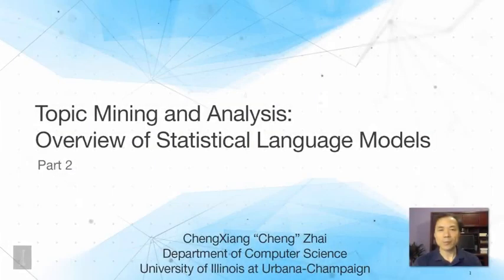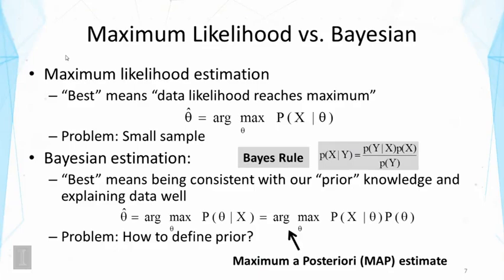Let's talk about the two different ways of estimating parameters. One is called maximum likelihood estimation, the other is Bayesian estimation. In maximum likelihood estimation, we define best as meaning the data likelihood has reached the maximum. Formally, it's given by the expression argmax of the probability of X given theta, where argmax returns the argument that gives the function its maximum value.